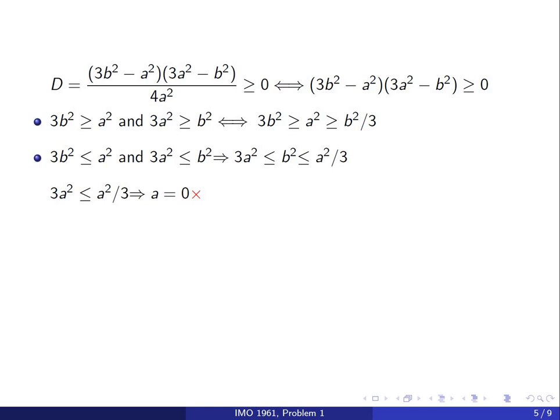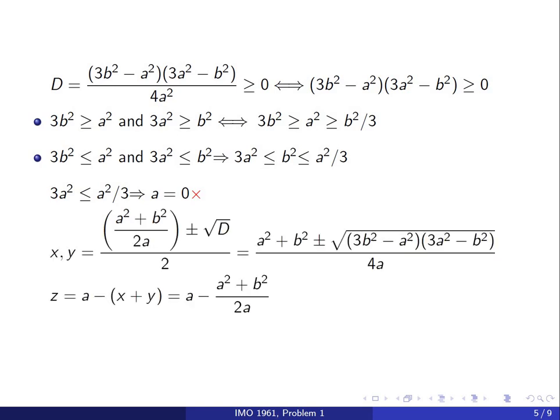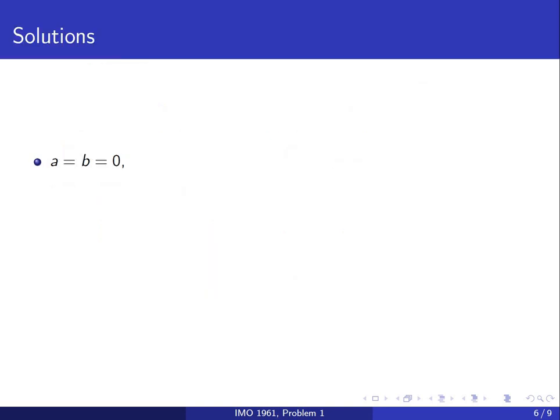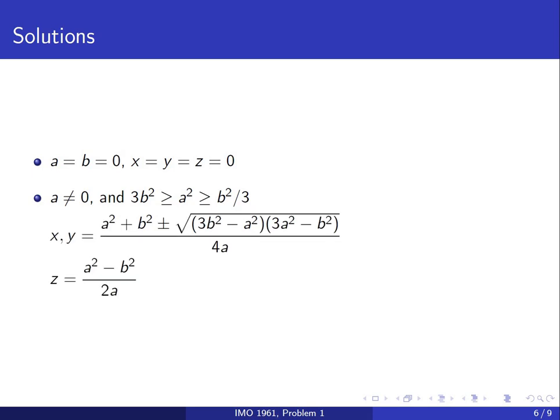Now that we know when roots exist, we can write down x and y using the quadratic formula. And z from the first equation would be a minus x plus y, where x plus y is a squared plus b squared over 2a, giving z equals a squared minus b squared over 2a. To summarize: if a and b are both 0, then x, y, and z are all 0. If a is not 0, the condition for solutions is 3b squared greater than or equal to a squared, greater than or equal to b squared over 3, and z equals a squared minus b squared over 2a.